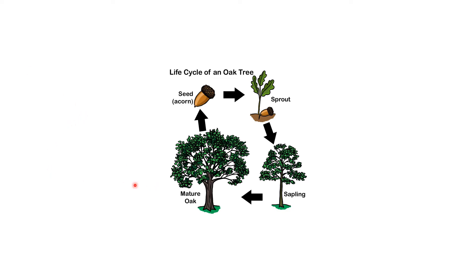Hello children, we are looking at the life cycle of an oak tree. Do you see this huge tree over here? It started from a small seed like this, then it sprouted, then it grew as a small tree called a sapling, and then it became a huge tree. This is the life cycle of an oak tree. As a matter of fact, all trees grow from a small seed — even your apple tree, even your neem tree — they grow from a small seed to a big, huge, mighty tree.